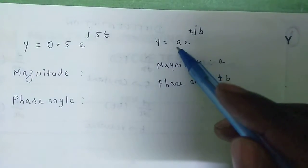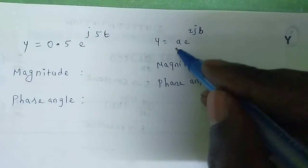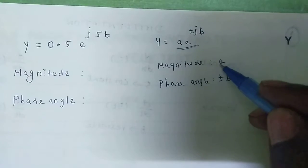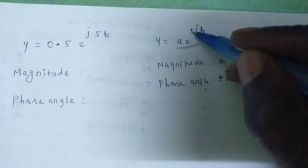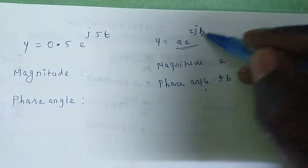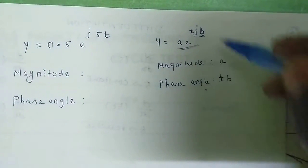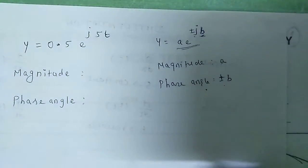Here, a is the magnitude value. In the concept, a is the magnitude and phase angle is plus or minus b. j would have a coefficient, and that would have a phase angle.